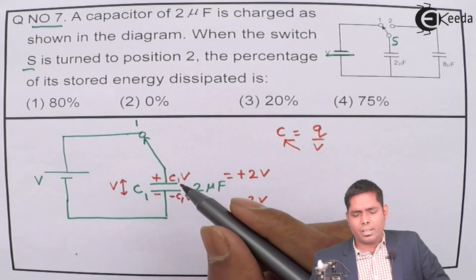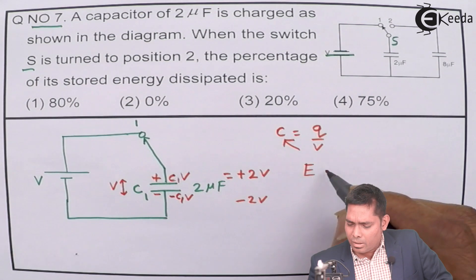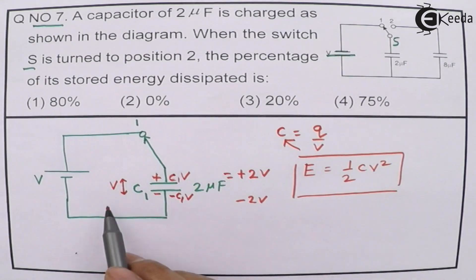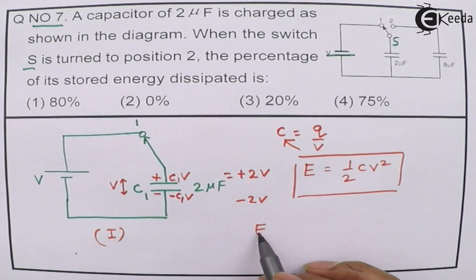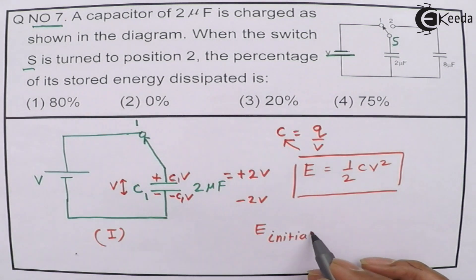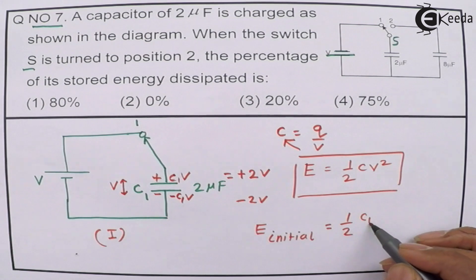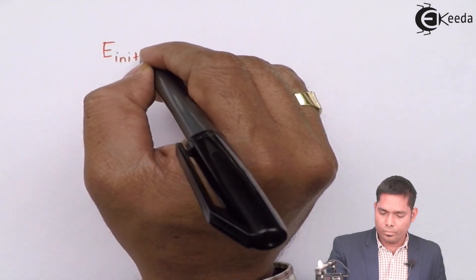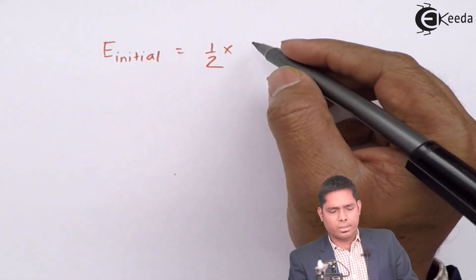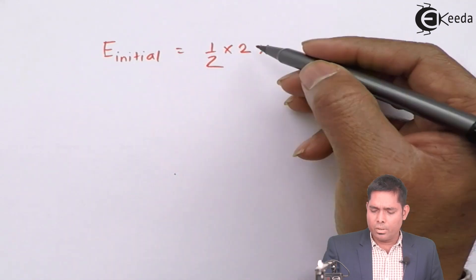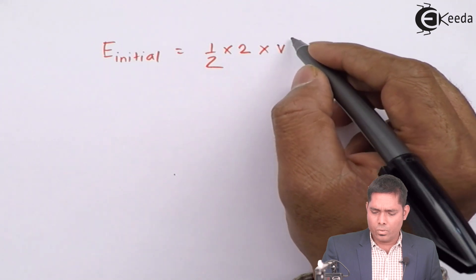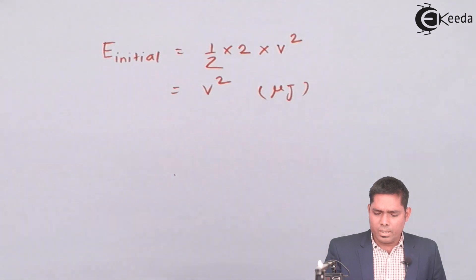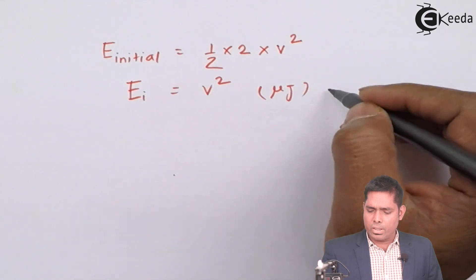In this initial situation, the energy stored in the capacitor is given by the formula: E = ½CV². Applying this for situation one — the initial case — the energy stored initially, E_initial = ½ × C1 × V² = ½ × 2 × V² = V² microjoules. So the initial energy E_i = V² microjoules. This is equation number 1.